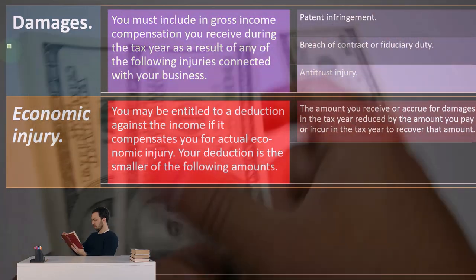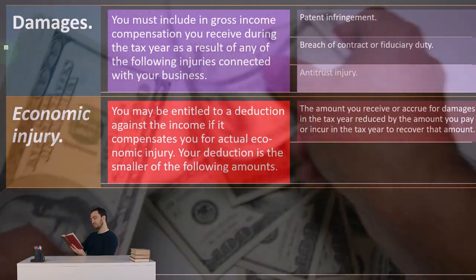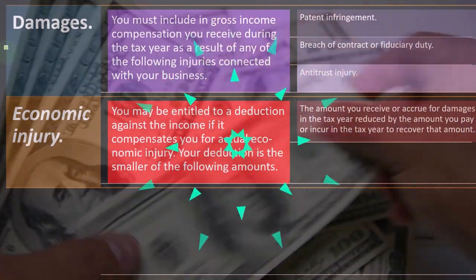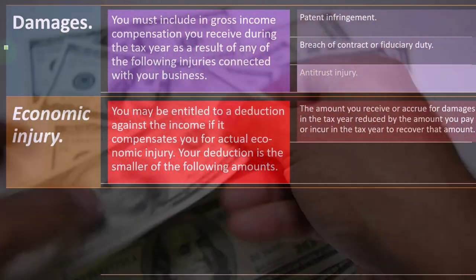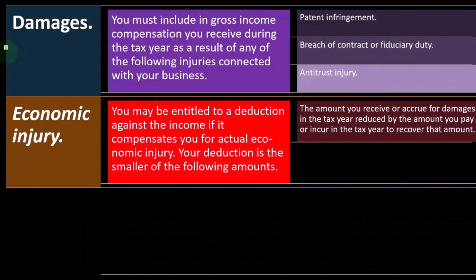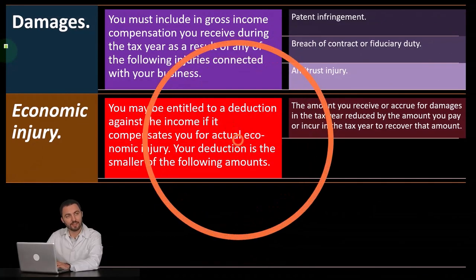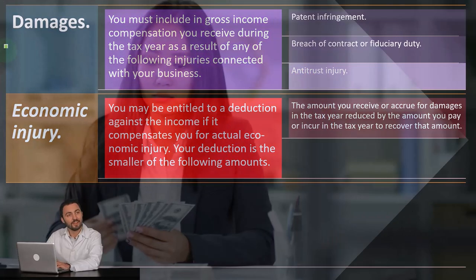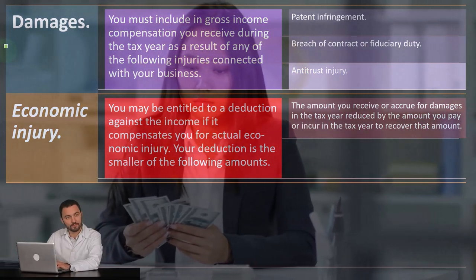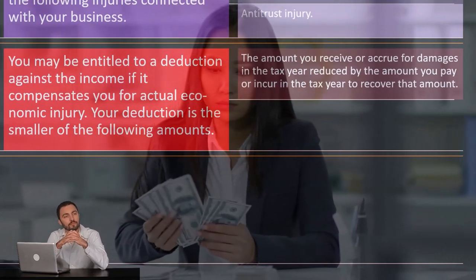If you have a damages situation, you're going to be getting payments, and the question is: do you have to include those amounts as income? If they're in income, you might also think about the damages or economic injury, which would be the expense side of things. Net income — income minus expenses — is what we're ultimately taxed on: income being bad, expenses or deductions being good.